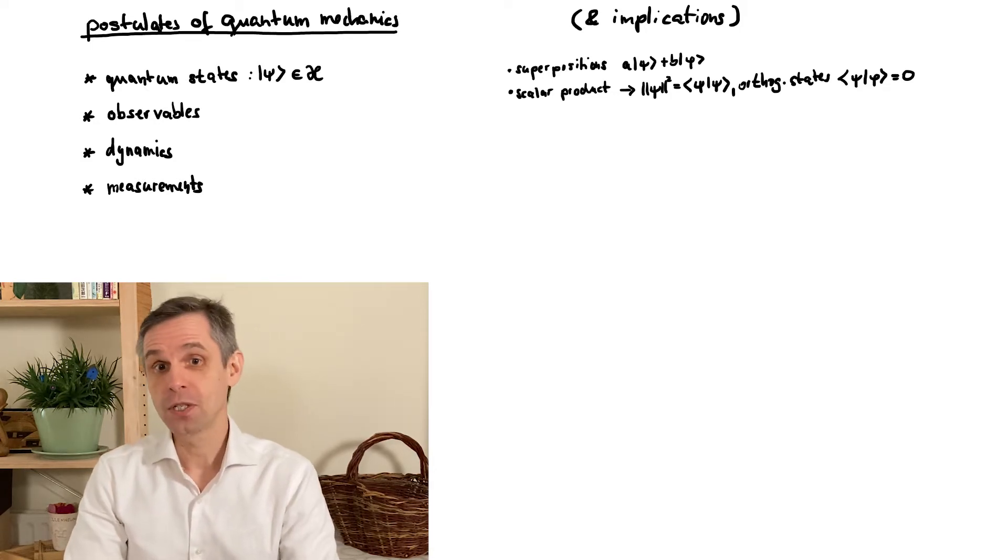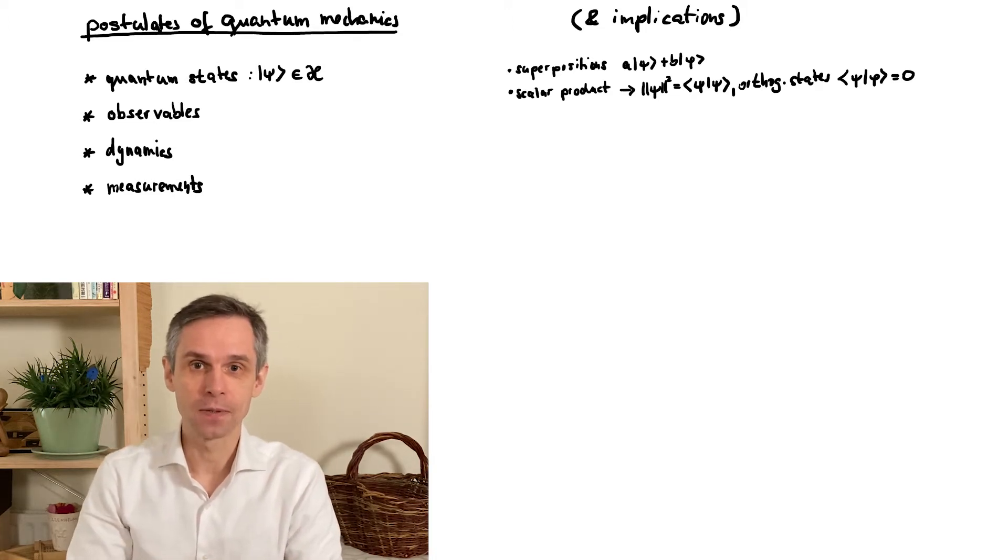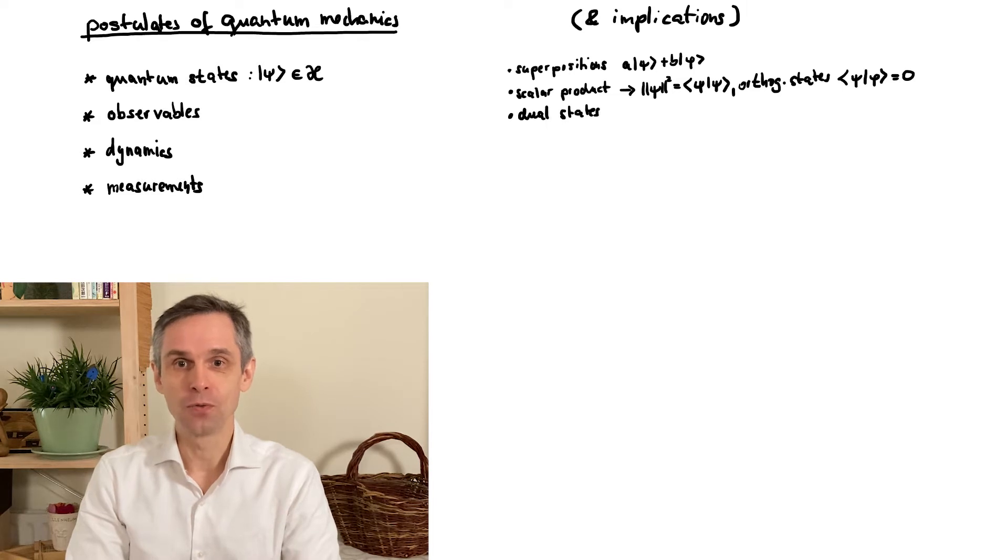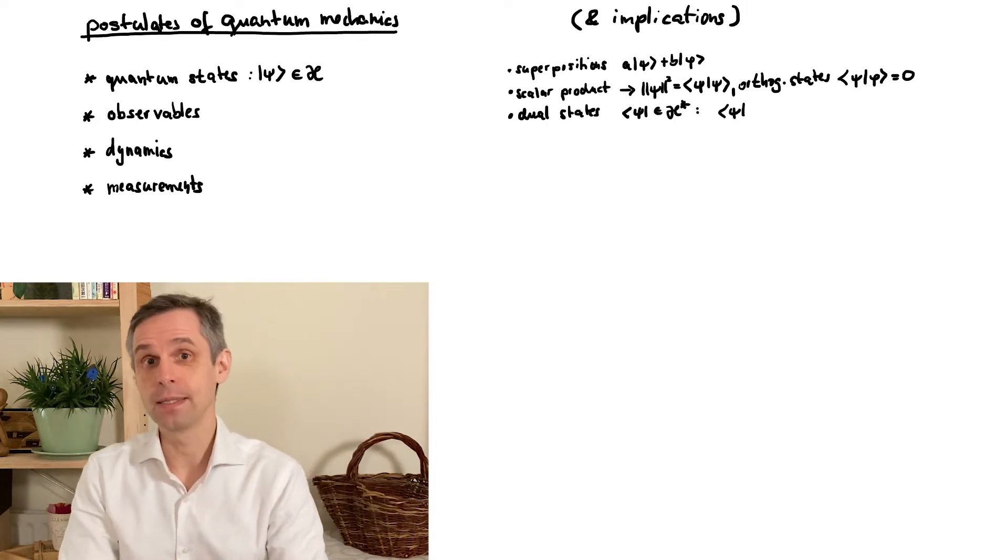But in terms of general constraints, we have already specified all that we need for these states. All the other features are just consequences. In particular using the scalar product, we can also give a separate sense to the symbol of the dual state, and we will convert this into the scalar product whenever it meets a normal quantum state in this order here.